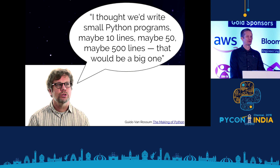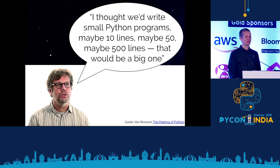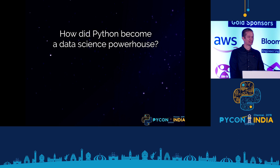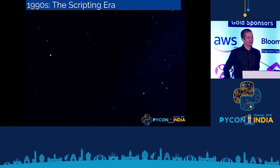Guido gave an interview where he talked about his expectations in developing Python. He said he thought they'd write small Python programs — maybe 10 lines, maybe 50, maybe 500 lines — and that would be a big one. Compare that to where we are today, where the top companies around the world have millions of lines of Python driving their products in everything from data analysis to finance. And 1,600 people gather in Chennai, India to talk about how they're using Python in their work.